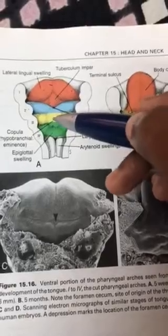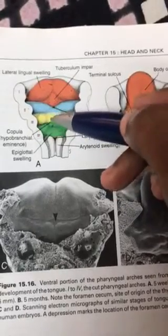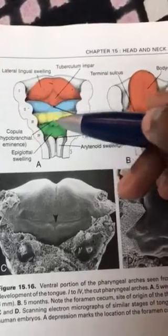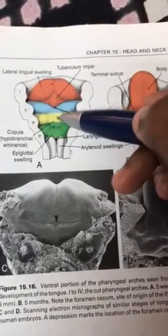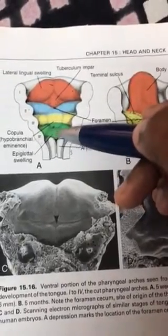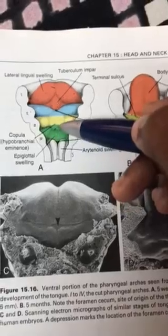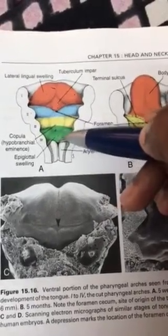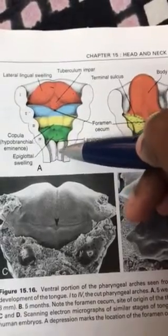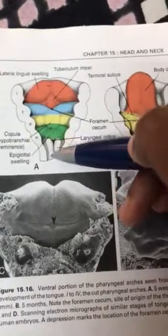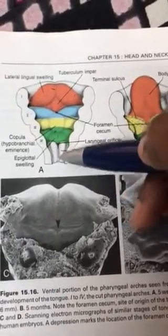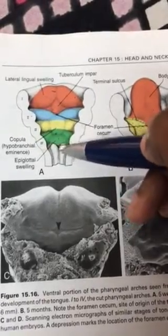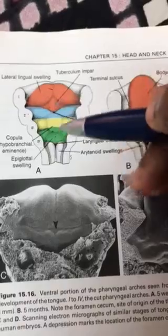The third and fourth arches join together to form a swelling called the hypobranchial eminence. Next to the fourth arch you have the sixth arch, which has the arytenoid swelling. The sixth arch usually forms the cartilages of the larynx, and this is also where the laryngeal inlet is located.